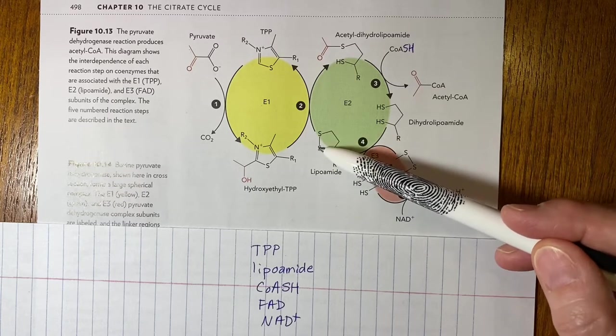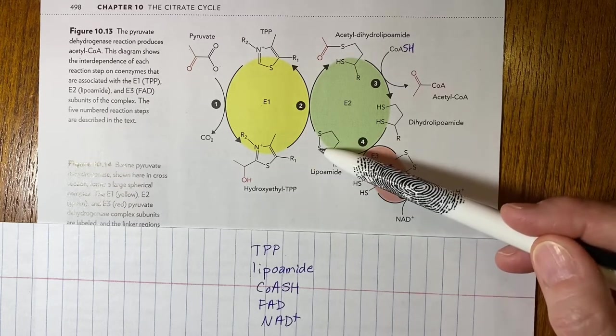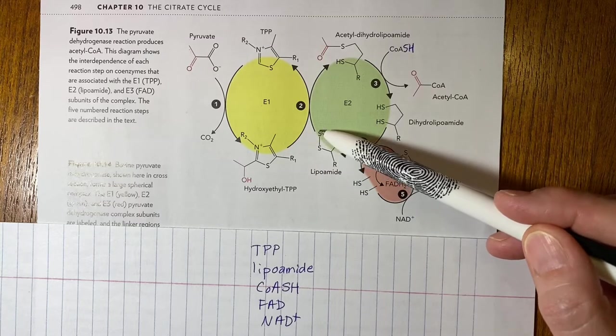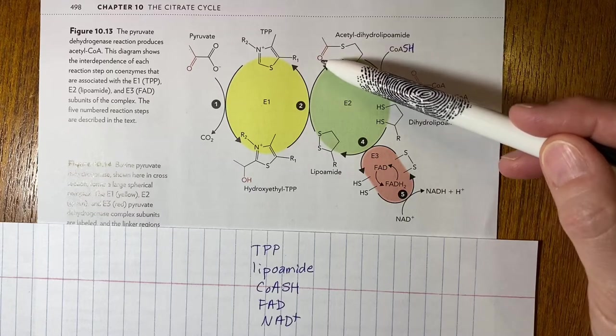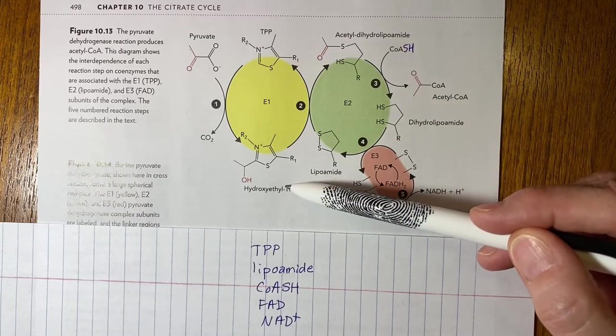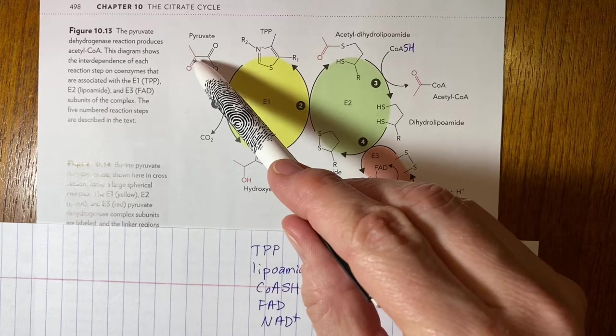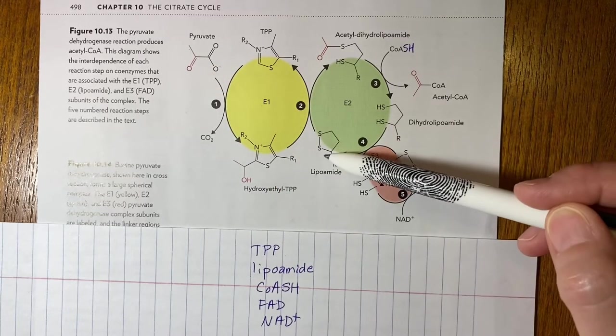It's a disulfide compound and when it does that it reduces this and oxidizes the hydroxyl so you get it back to the acetyl group. So TPP's role is to carry the acetyl group from pyruvate to lipoamide.